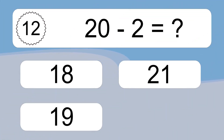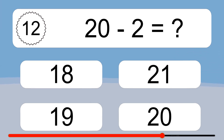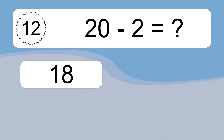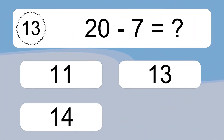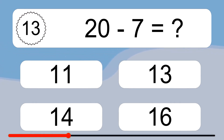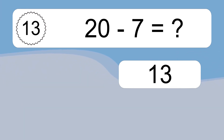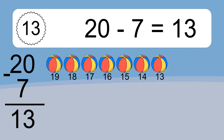20 minus 2 equals what? 20 minus 2 equals 18. Let's count it: 19, 18. 20 minus 7 equals what? 20 minus 7 equals 13. Let's count it: 19, 18, 17, 16, 15, 14, 13.